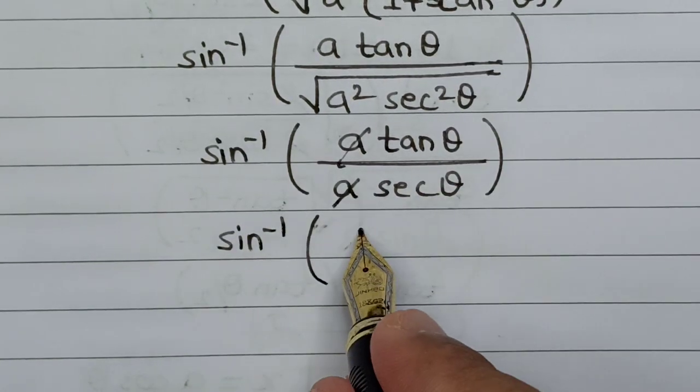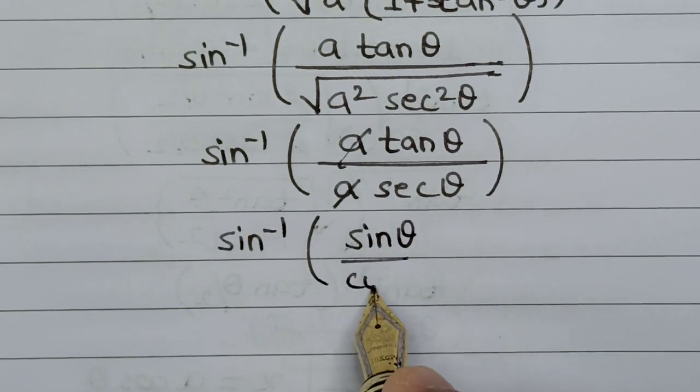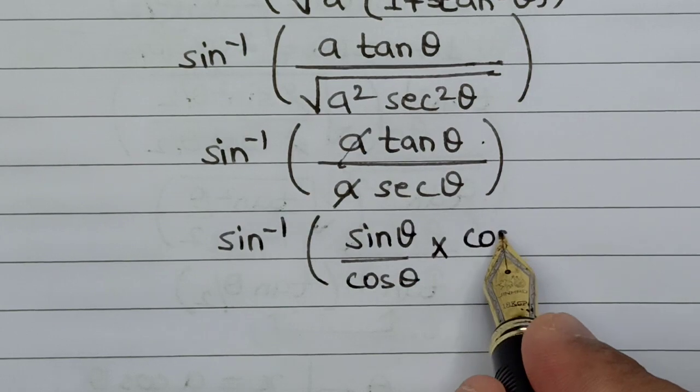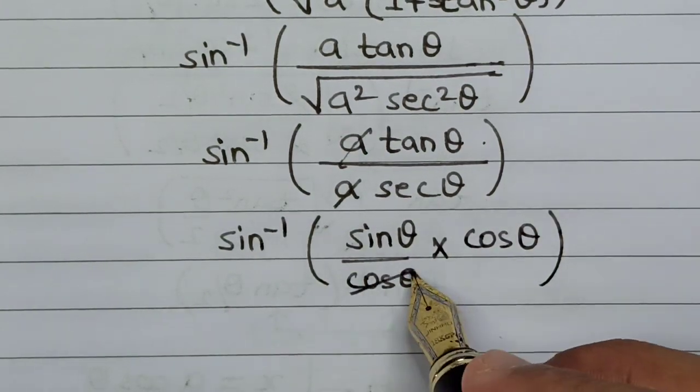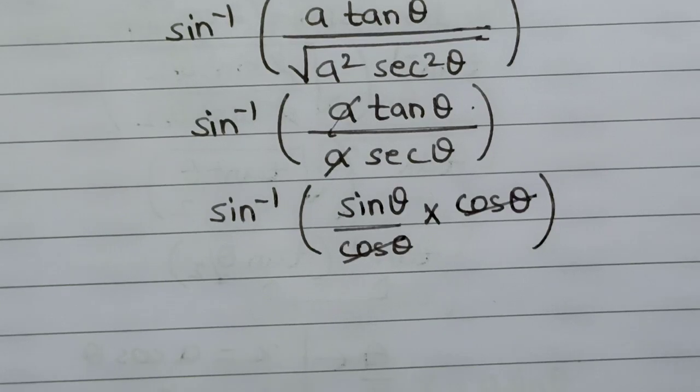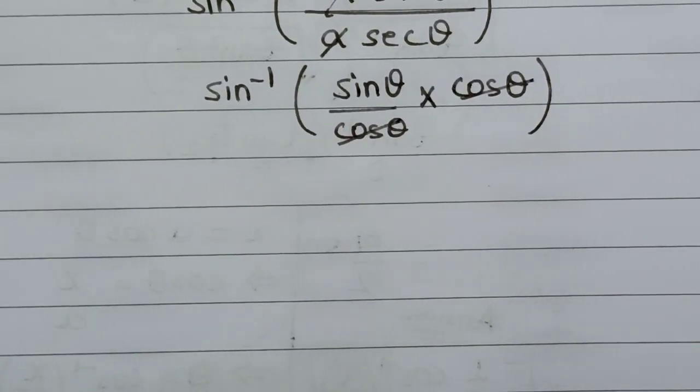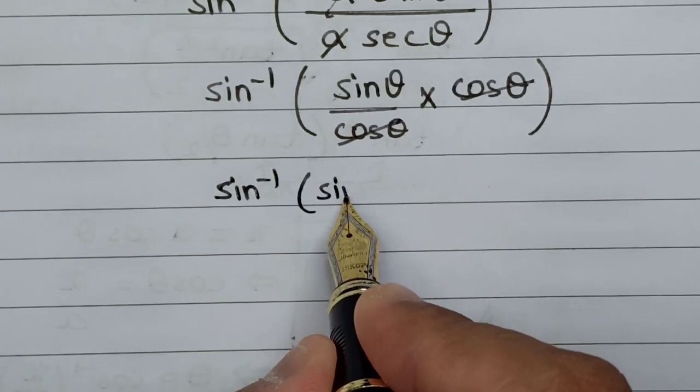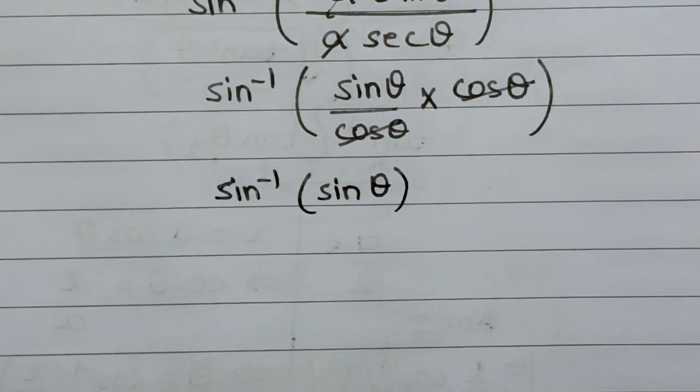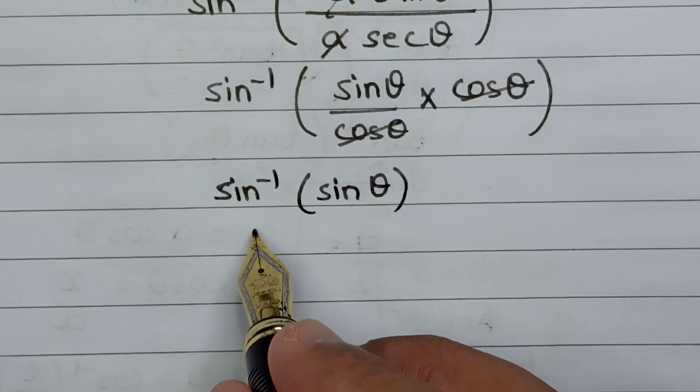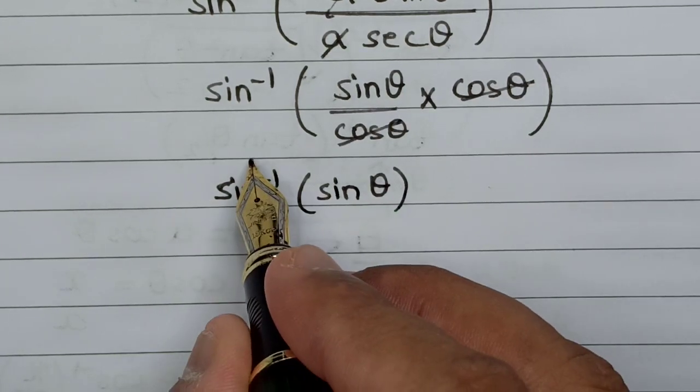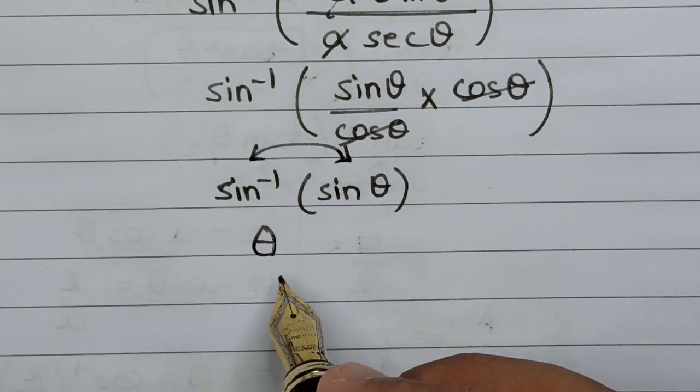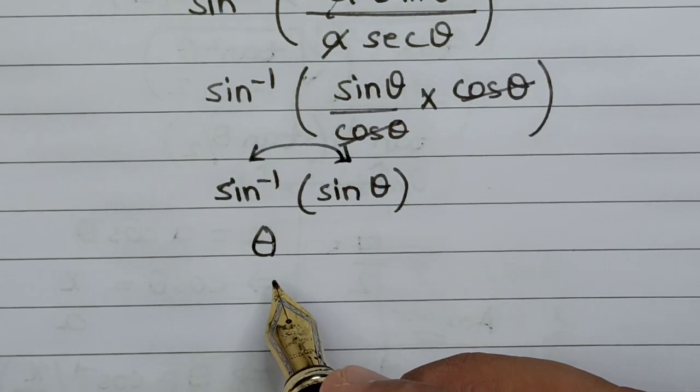This tan theta can be written as sine theta upon cosine theta, and 1 upon sec theta is basically cosine theta. The cosines cancel out, so we're left with sine inverse of sine theta, which gives us theta because the pair of sine inverse and sine cancel out.